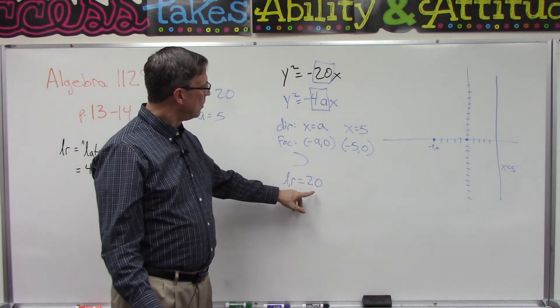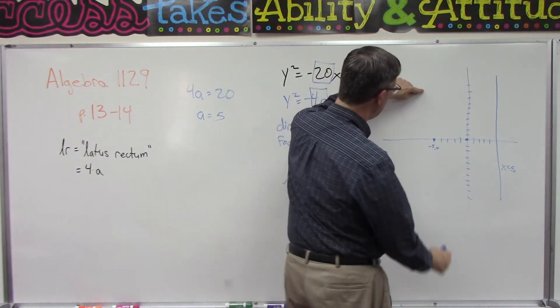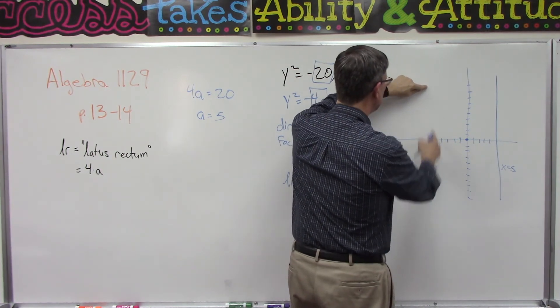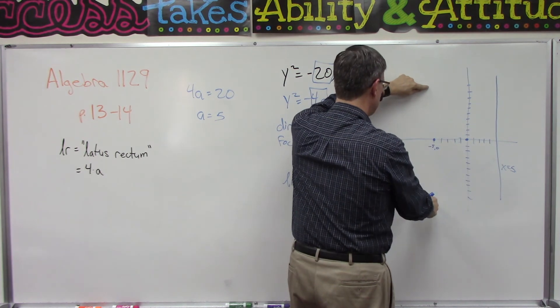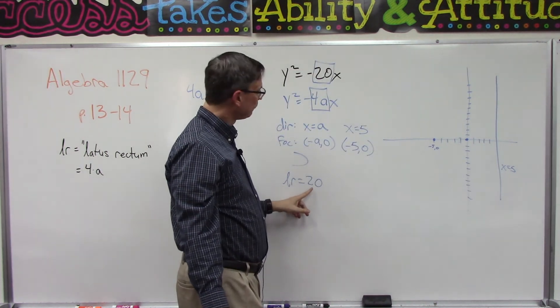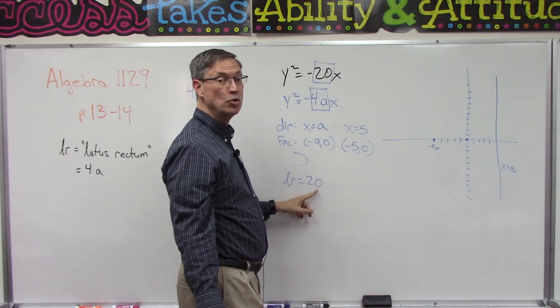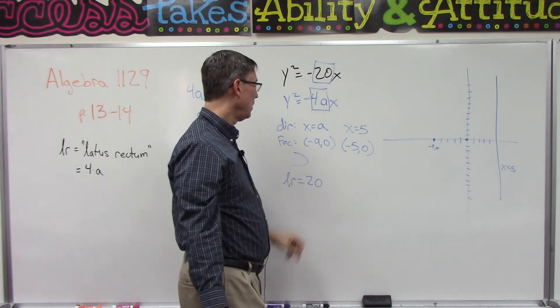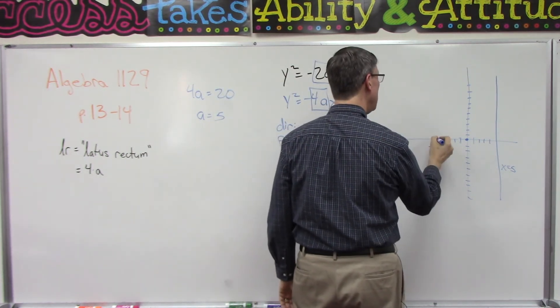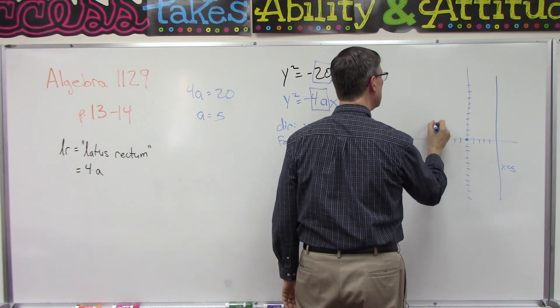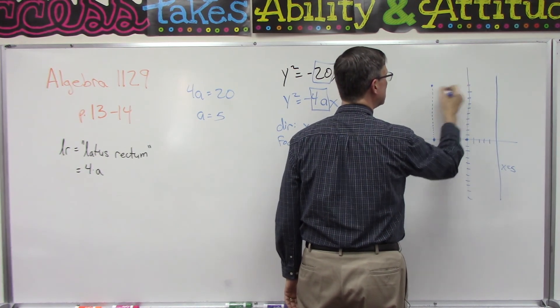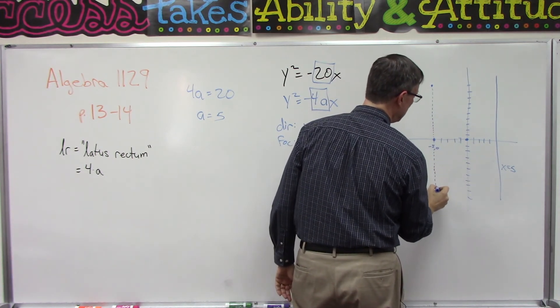Now we've got to put in the latus rectum to see how that helps us in graphing. From this point here to this point here needs to be 20 units long. Well, it's going to be symmetrical, so if we take the 20 and divide by 2, then I'll have a height of 10. So right up to here is 10, and then if I come down to here, that's the other 10.